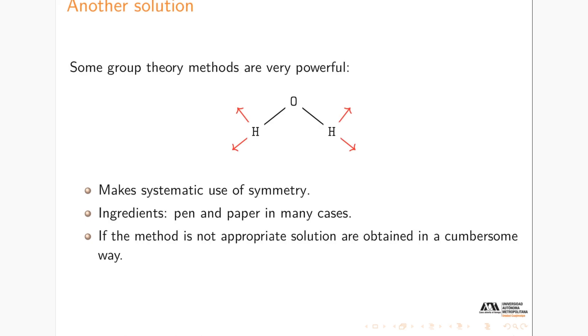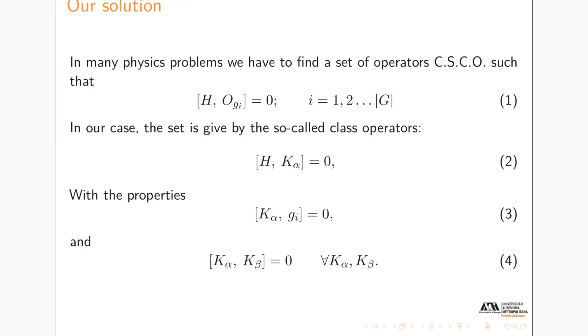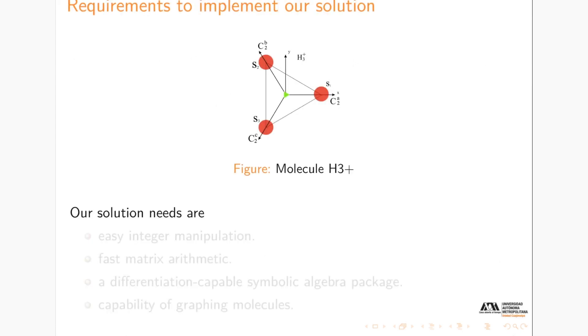Well, we are only just having this set of equations because we will use something called the complete set of commuting operators. And why I am mentioning this? Because if you have to find this kind of set of commuting operators, it will be very important to have symbolic manipulation capabilities. That's one of the things that makes Julia so powerful in the solution of these problems.